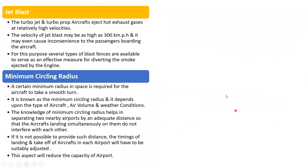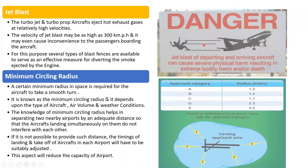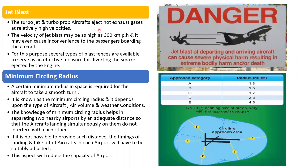The next factor is jet blast. Turbojet and turboprop aircraft eject hot exhaust gases at relatively high velocities — the velocity of jet blast may be as high as 300 kilometers per hour, and it may cause inconvenience to passengers boarding the aircraft. Several types of blast fences are available to serve as effective measures for diverting the exhaust ejected by the engine. Signage boards are put up warning that jet blast from departing and arriving aircraft can cause severe physical harm or death.